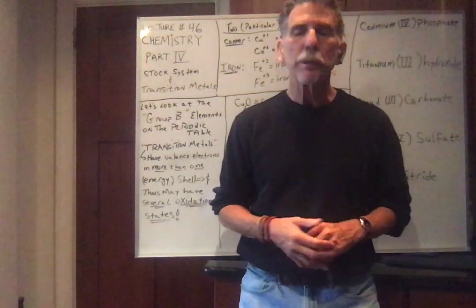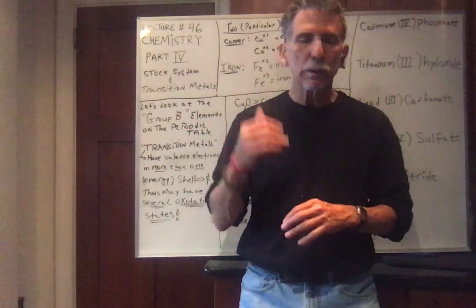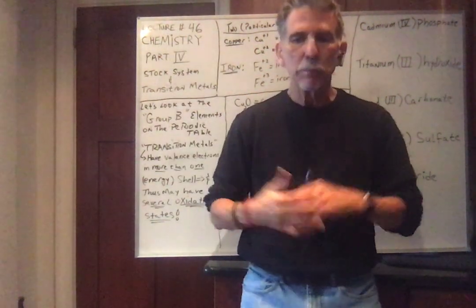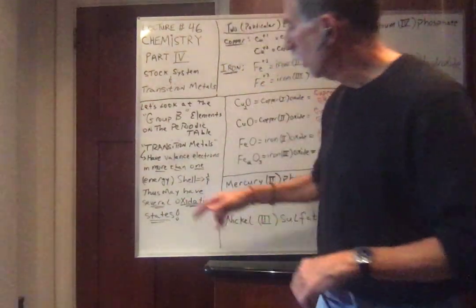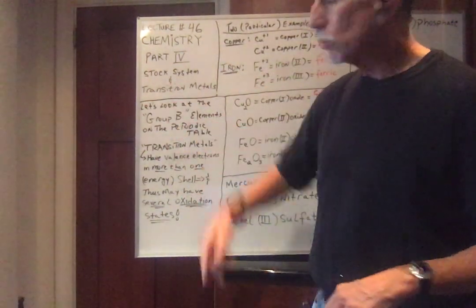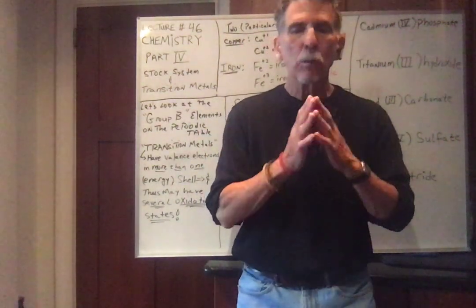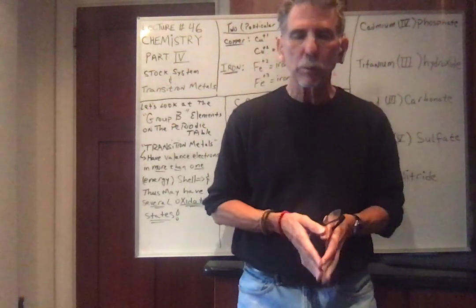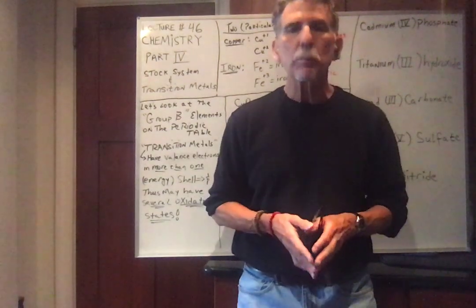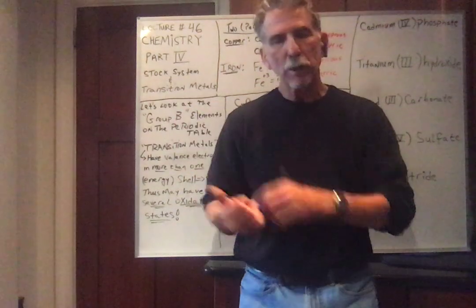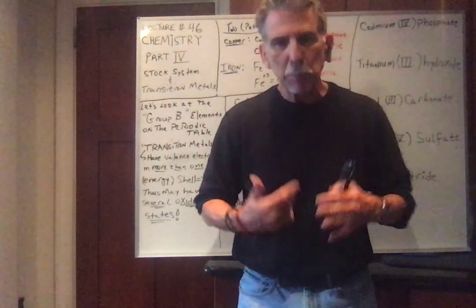And it turns out more complicated elements can have electrons, valence electrons, electrons in two different shells at the same time, still being in the lowest energy state. So these transition metals can have different oxidation numbers. Remember, oxidation number group 1A was always plus 1, group 2A was always plus 2, group 3A always plus 3, group 5A always minus 3 because it wanted 8, group 7A always minus 1.